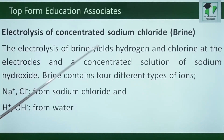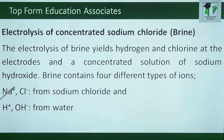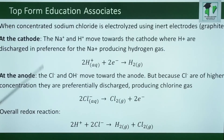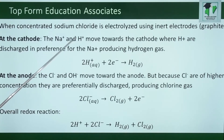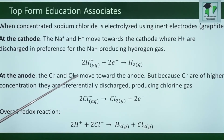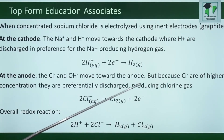Electrolysis of concentrated sodium chloride or brine. The electrolysis of brine produces hydrogen and chlorine at the electrodes, and a concentrated solution of sodium hydroxide. Brine contains four different types of ions: sodium ion and chloride ion from sodium chloride, and hydrogen ion and hydroxyl ion from water. When concentrated sodium chloride is electrolyzed using inert electrodes such as graphite, at the cathode, the sodium and hydrogen ions move towards the cathode, where hydrogen ions are discharged in preference to the sodium ion, producing hydrogen gas. While at the anode, the chloride and hydroxide ions move towards the anode, but because chloride ions are of higher concentration, they are preferentially discharged, producing chlorine gas.